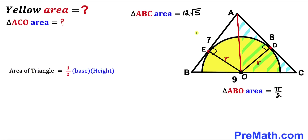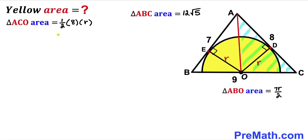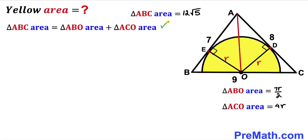Next, we calculate the area of triangle ACO using the same formula. The base of triangle ACO is AC = 8, and the height is radius r. So the area of triangle ACO = ½ × 8 × r = 4r.